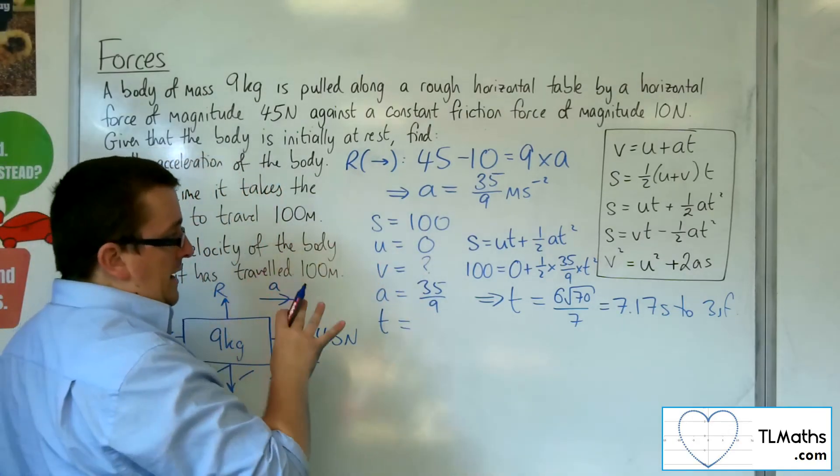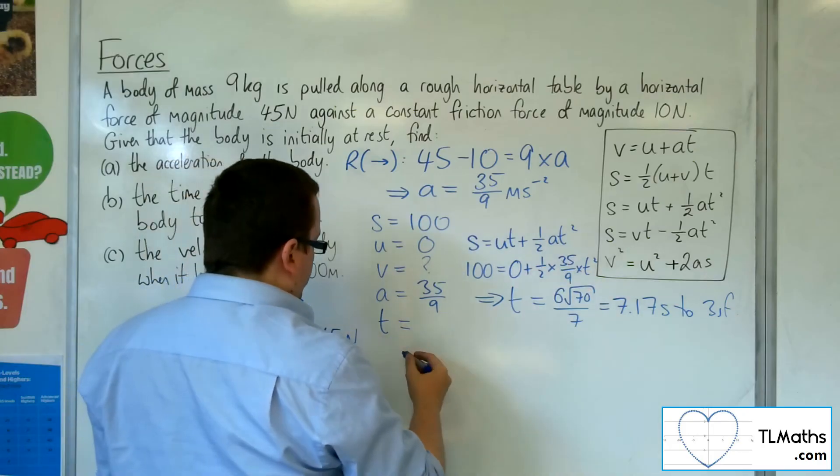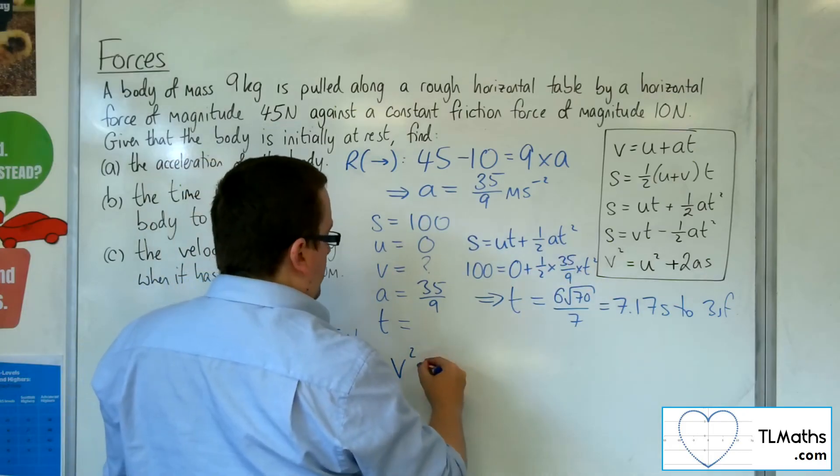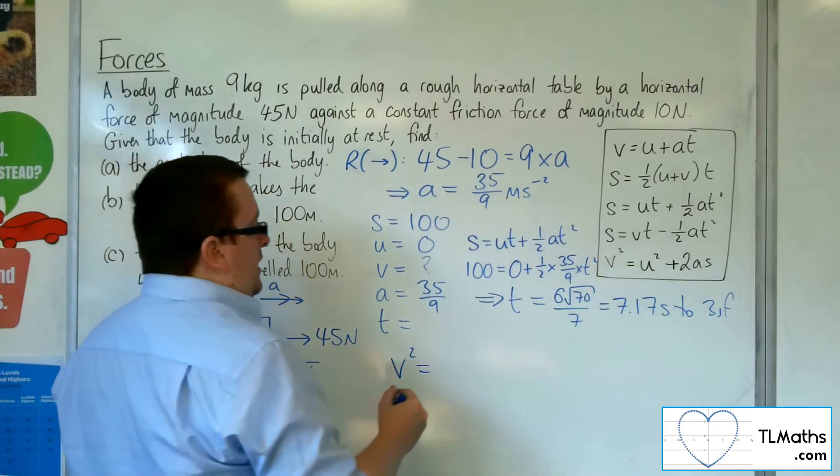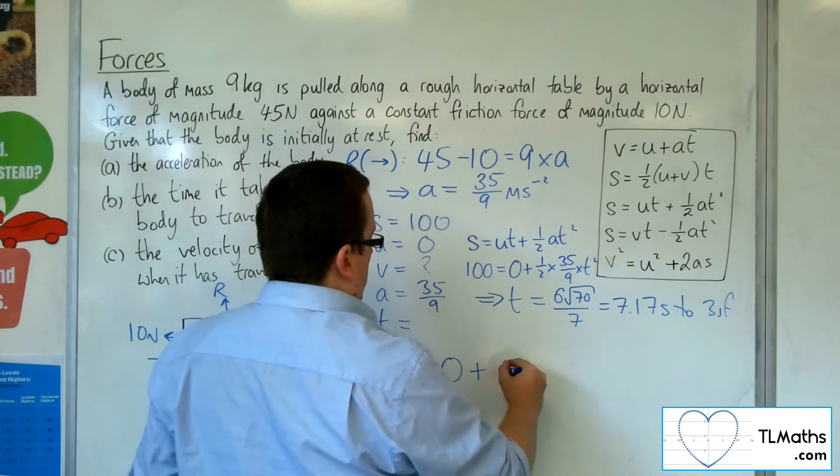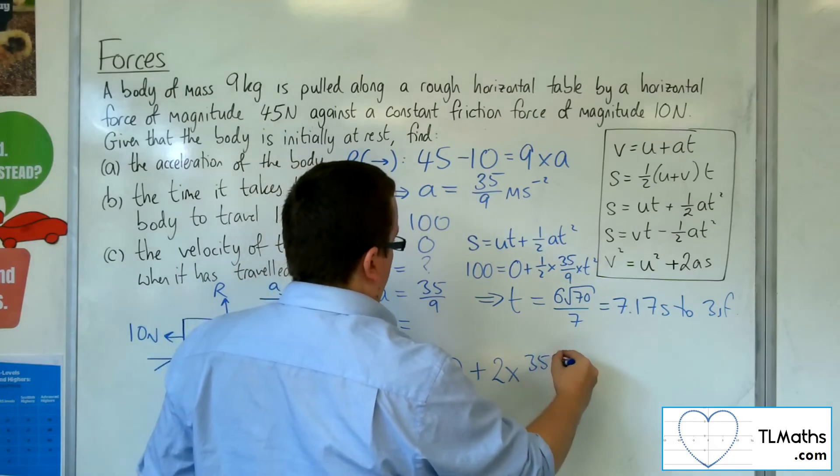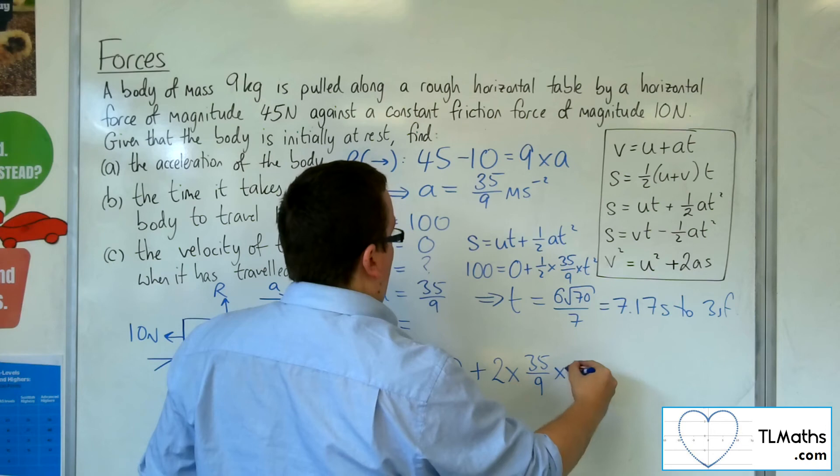So I want V. I want the equation that doesn't have T in it, which is the last one. So V squared is what I want to find, is equal to U squared, so 0, plus 2 lots of A times S.